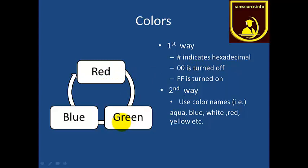In the RGB color model: Red 00, Green 00, Blue 00 gives black. If Red is FF, Green 00, Blue 00, you get red color. There are two ways to specify colors in web pages: the first way uses hexadecimal values, and the second way also adds color.